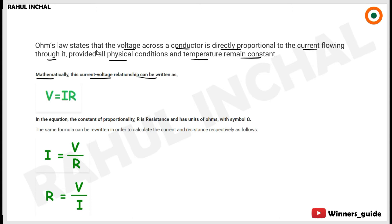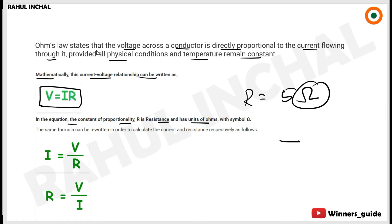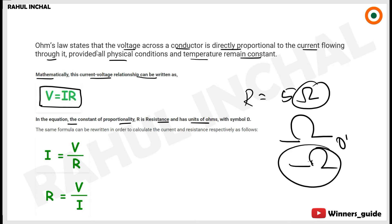An ohmic conductor is one where the voltage-current graph is a straight line with constant slope. A non-ohmic conductor has a curved V-I graph — there is no constant slope. The slope of the V-I graph gives the resistance R.